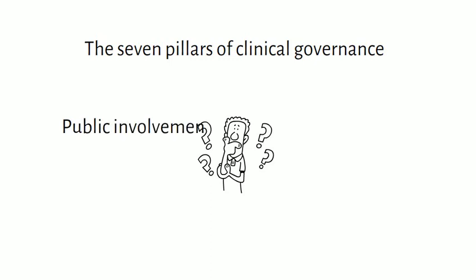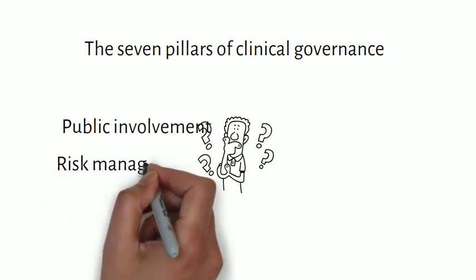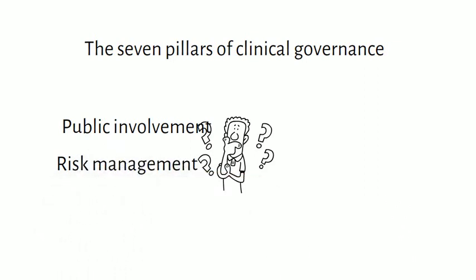The first pillar involves patient and public involvement. Representation at some levels of hospital committees is considered important to ensure patient needs are kept high. The second pillar is risk management, which means the process of identifying threats that would harm the organization, its patients, staff, or anyone else within the facility.